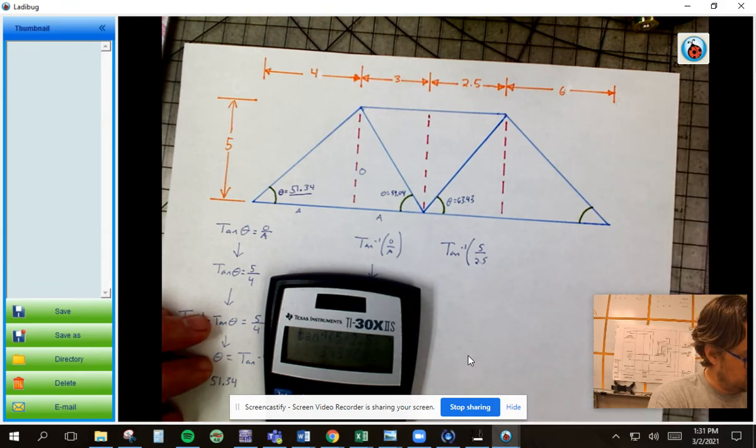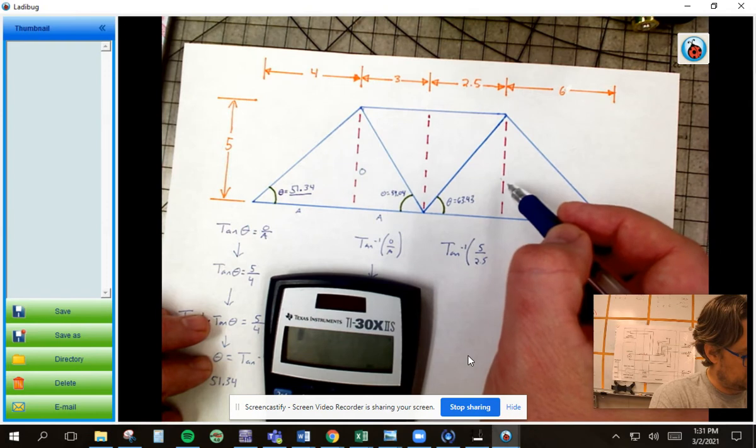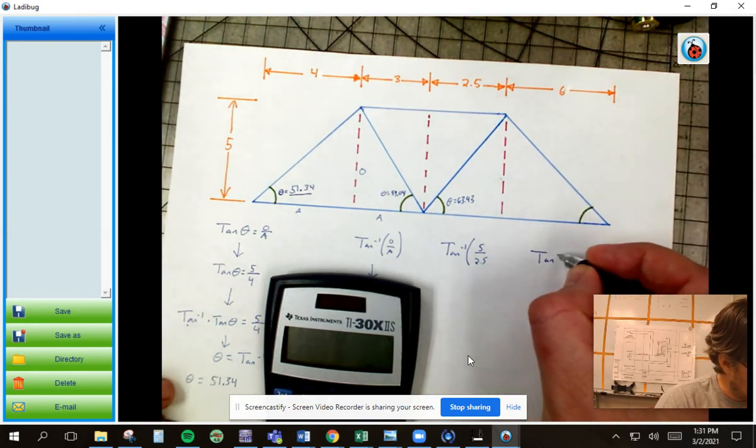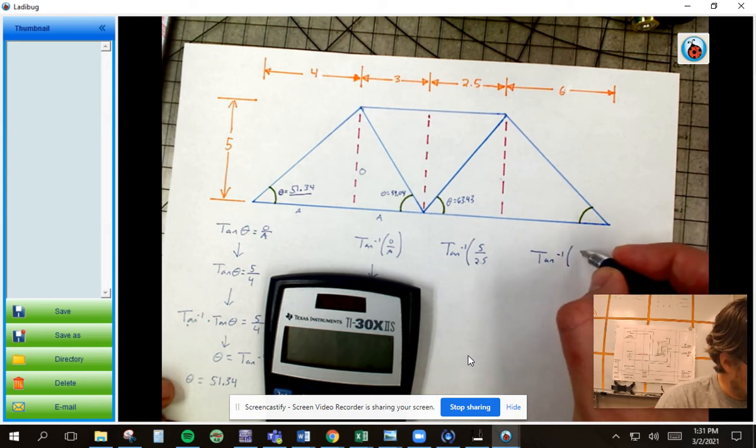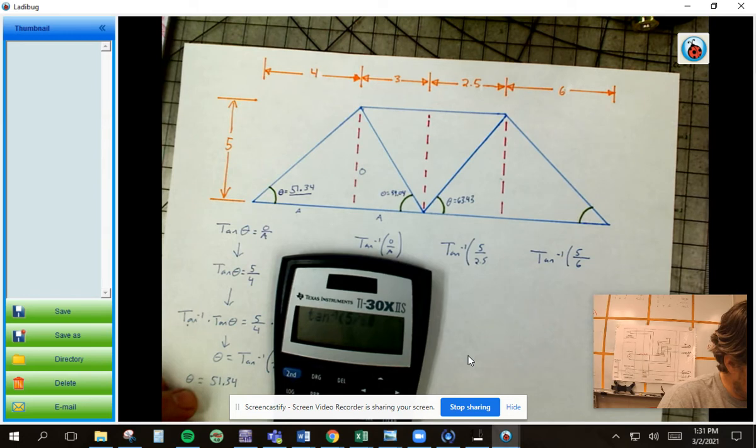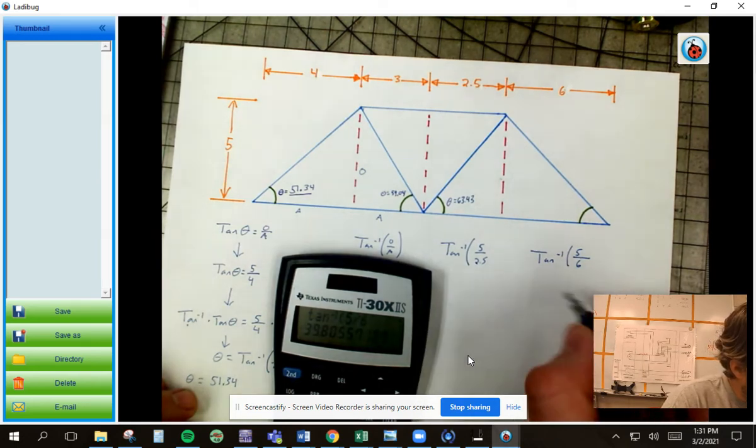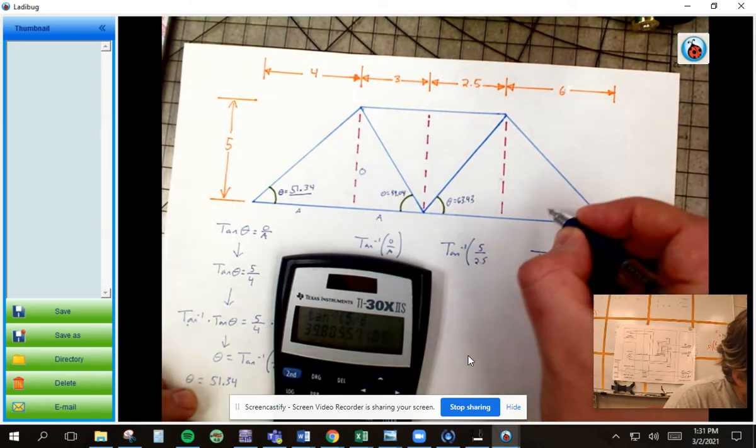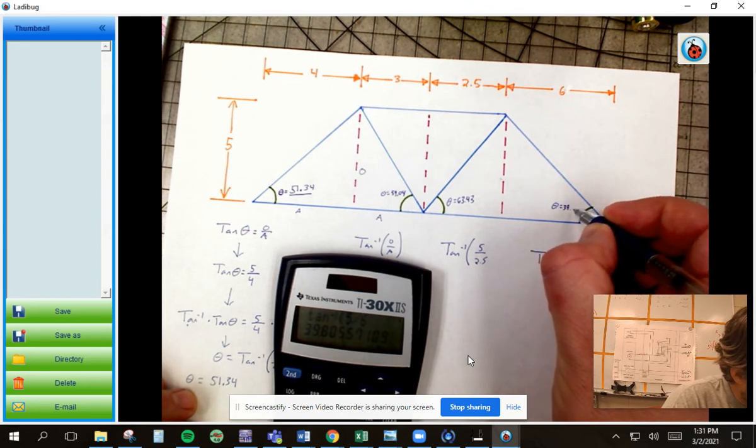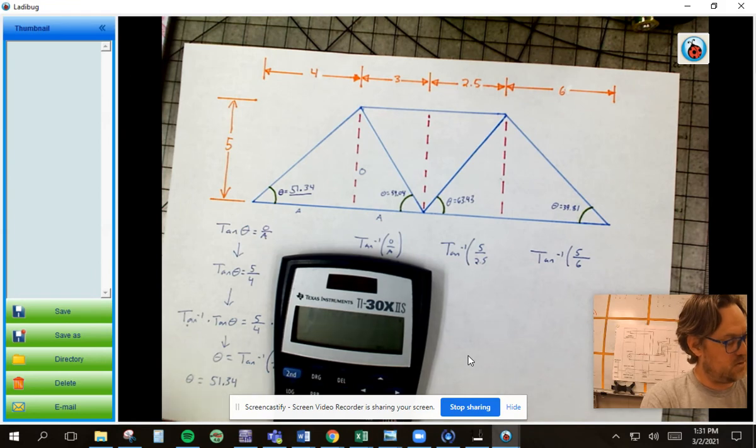Last one, right over here. Opposite is five, adjacent is six. So tangent inverse, opposite is still five, and my adjacent is six. And that gives me theta is 39 point, we'll call it eight one.